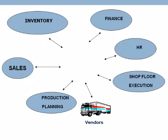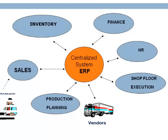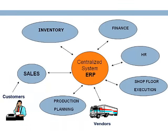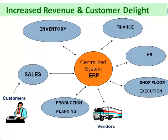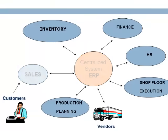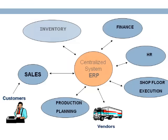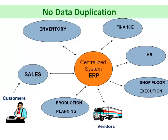In this case, all departments update a central information system. When a customer approaches the sales team to buy a product on an urgent basis, the sales team has real-time information access to products in inventory, which is updated by the inventory department in the centralized system. The sales team responds on time, leading to increased revenue and customer delight. If manufacturing is required, the sales team updates the centralized database, and the production planning department is auto-updated for requirements. The production planning team checks raw material availability via the central database, avoiding data duplication and ensuring accurate data.